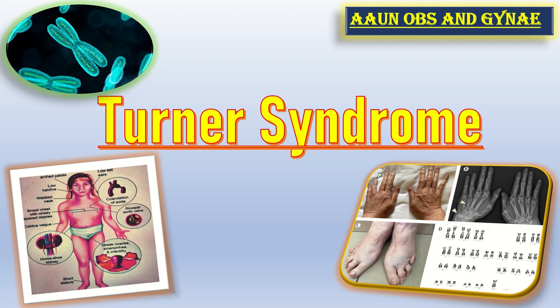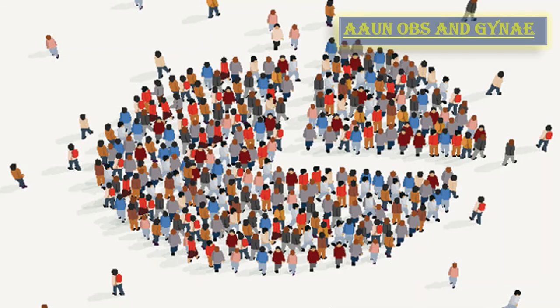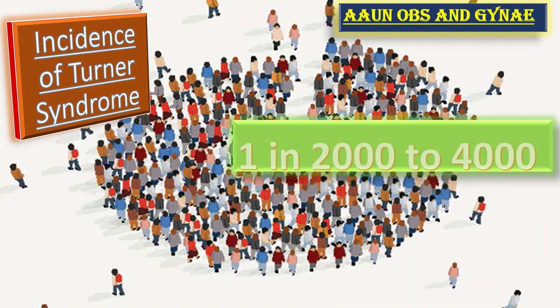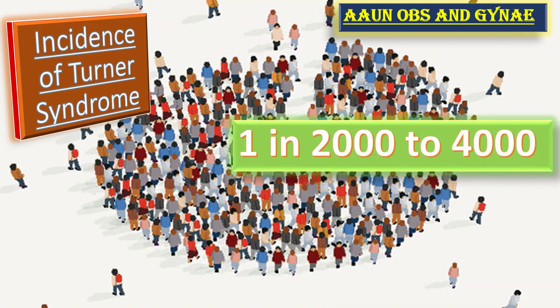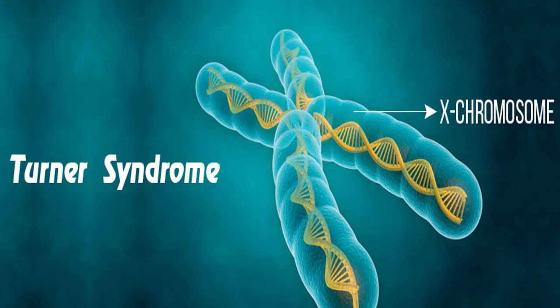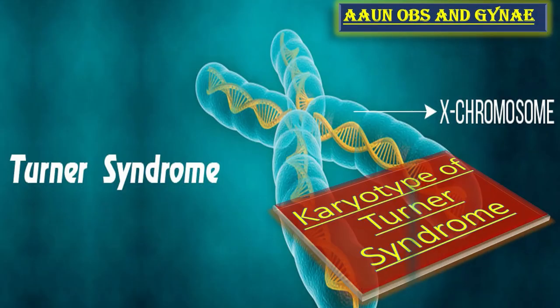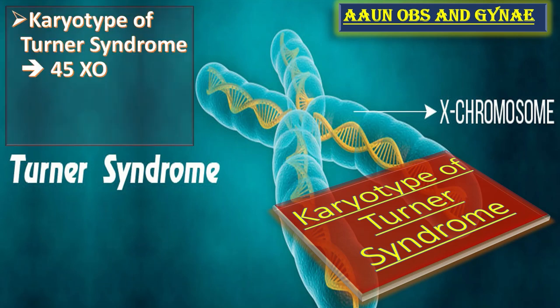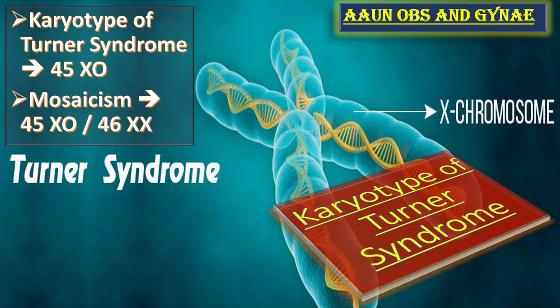Let us start our topic from the incidence of Turner syndrome. The incidence of Turner syndrome in a general population is 1 in 2000 to 4000. The karyotype of Turner syndrome is 45XO, and there is mosaicism in Turner syndrome which includes 45XO and 46XX.